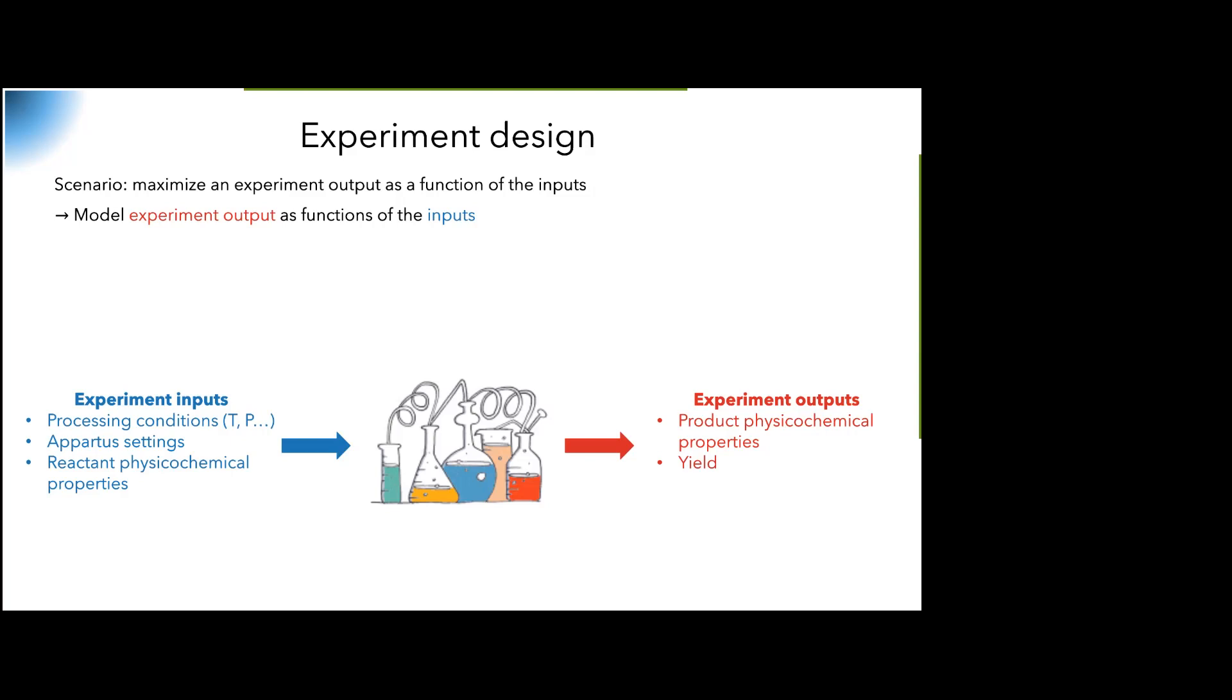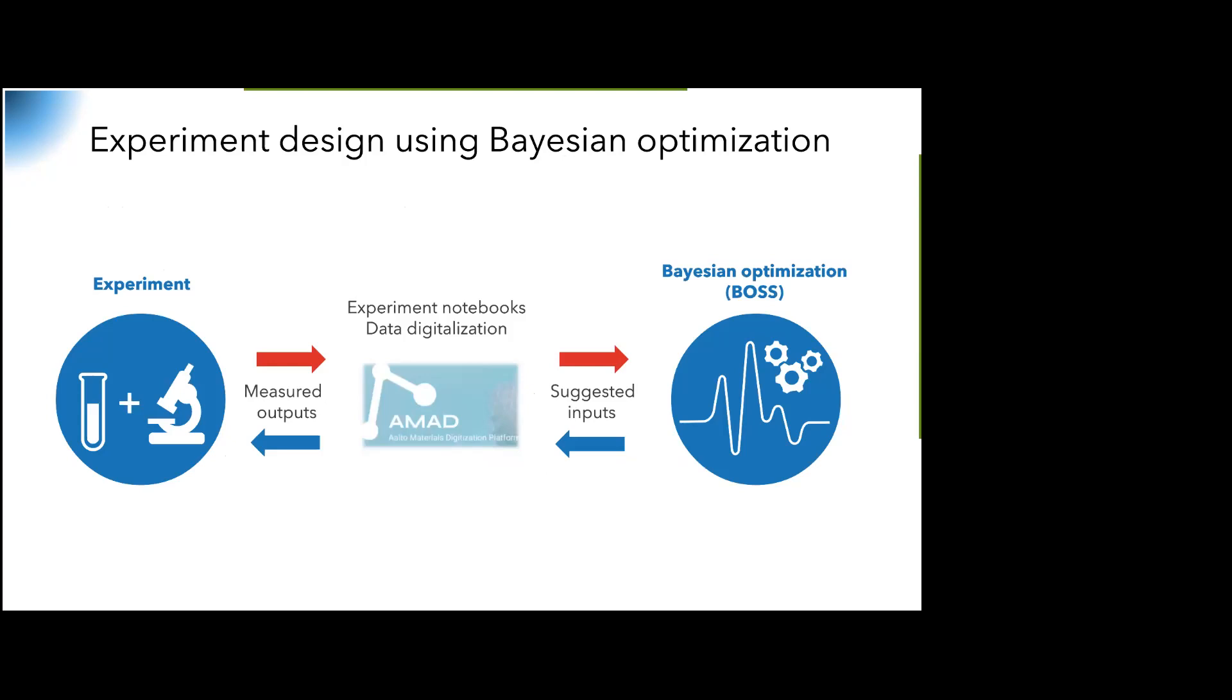What we do is we want to develop some kind of model for the outputs as a function of the inputs. The type of experiments that we have in mind are usually derived from chemistry or biochemistry. They typically take several days of work for processing and characterization. So we're not really in a high-throughput scenario. Every sample is precious, and if you go to our experimental collaborators and say you want 200 samples, they will say no. Our goal is to perform as few experiments as possible. And then we, of course, immediately think of Bayesian optimization.